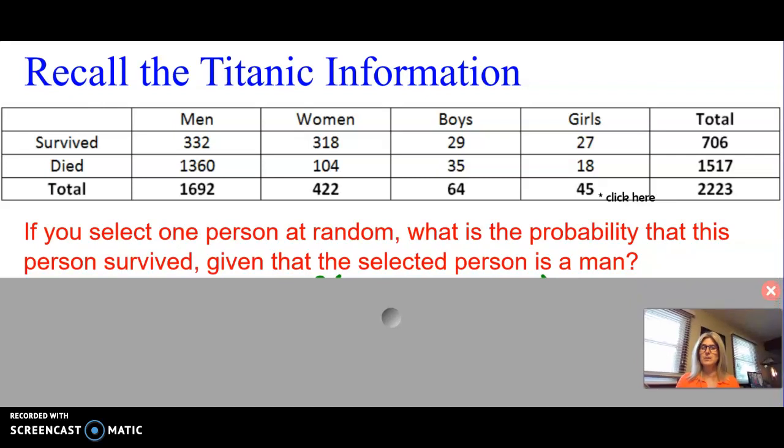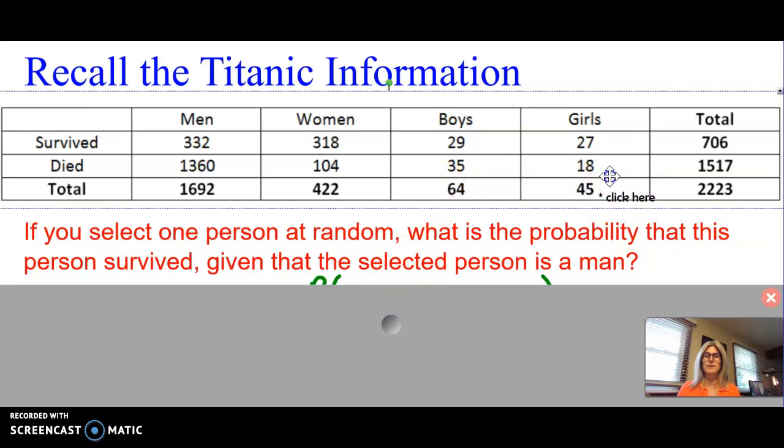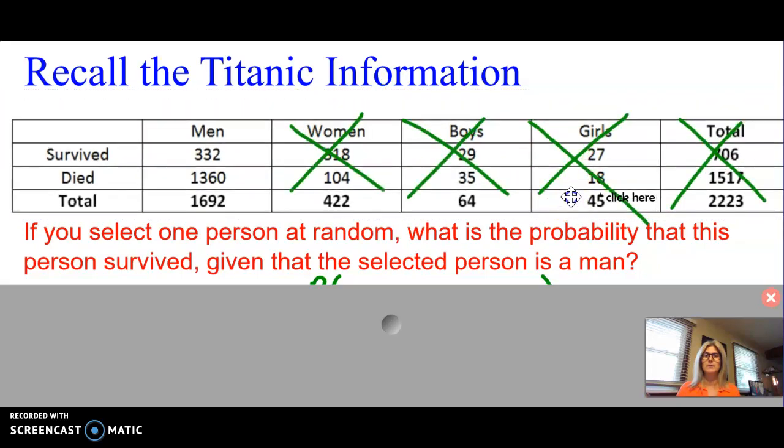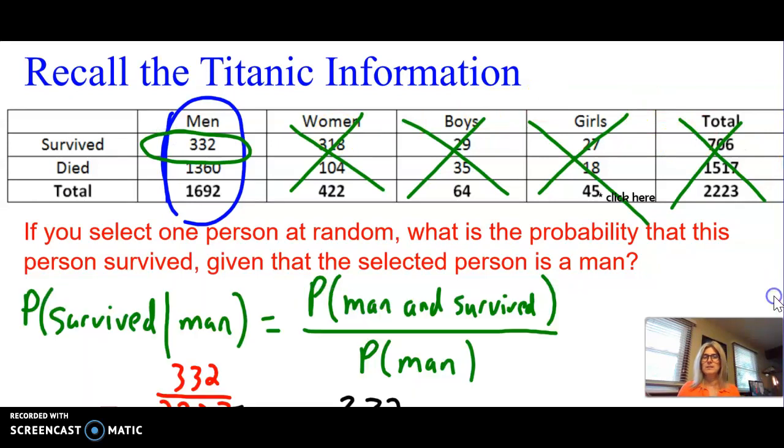Let's take a look at this with a contingency table. Here's our Titanic information in a contingency table. If you select one person at random, what is the probability that the person survived given that the selected person is a man? Now listen to that. We're given, given that it's a man. So we're going to X out everything that's not men. We're only looking at the men. So we're given that it is men. Then it says surviving men. So surviving men, we only can pick from the men. Here are the surviving men. So I'm going to reveal the answers and using that definition. Here we got the probability of survived given man.